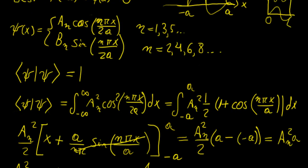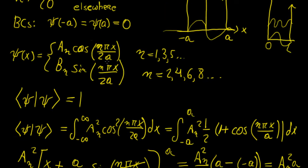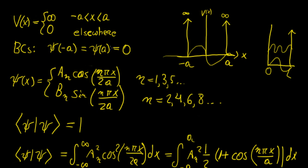So in the end both cases share the same normalization constant 1/√a, and only the cosine or sine form changes depending on n. This example illustrates how shifting the boundary conditions to be symmetric about the vertical axis — from [0, L] to [−a, a] — leads to solutions that alternate between cosine and sine depending on whether n is odd or even. Very interesting phenomena emerge simply by changing the boundary conditions.